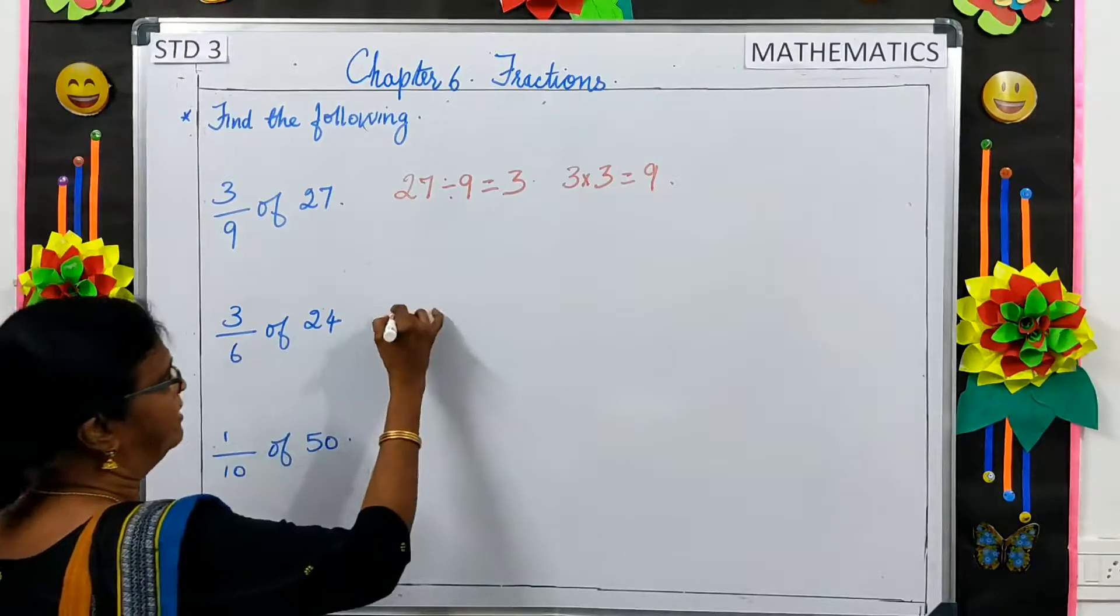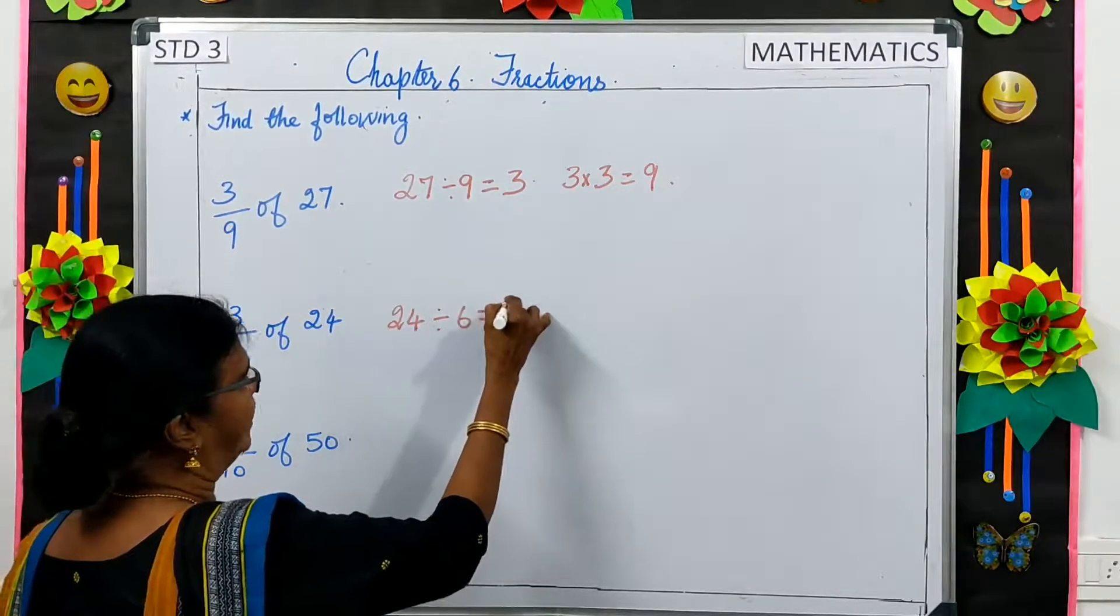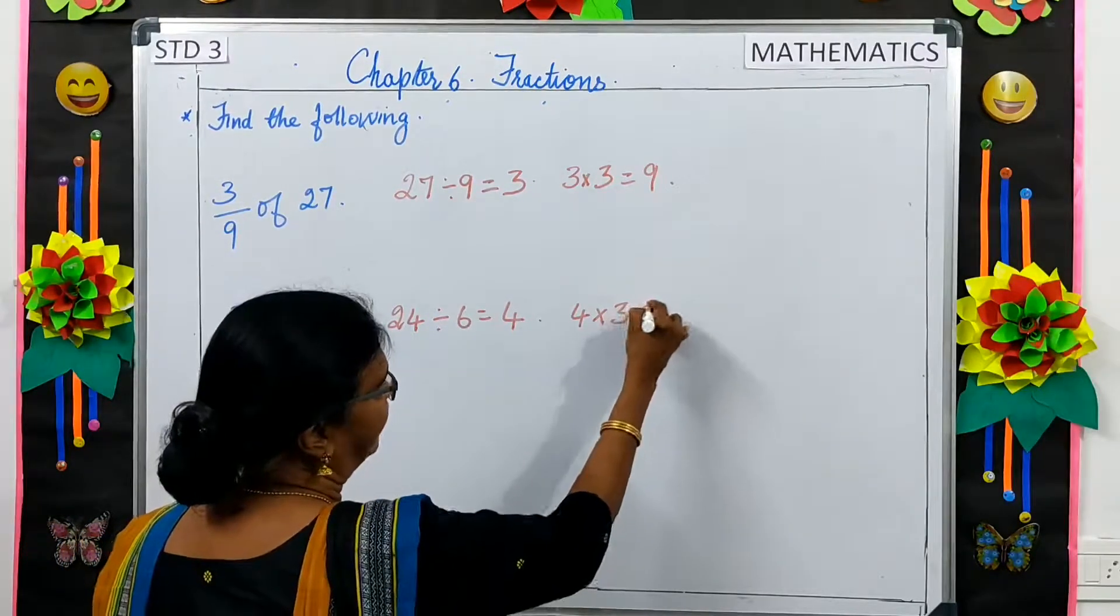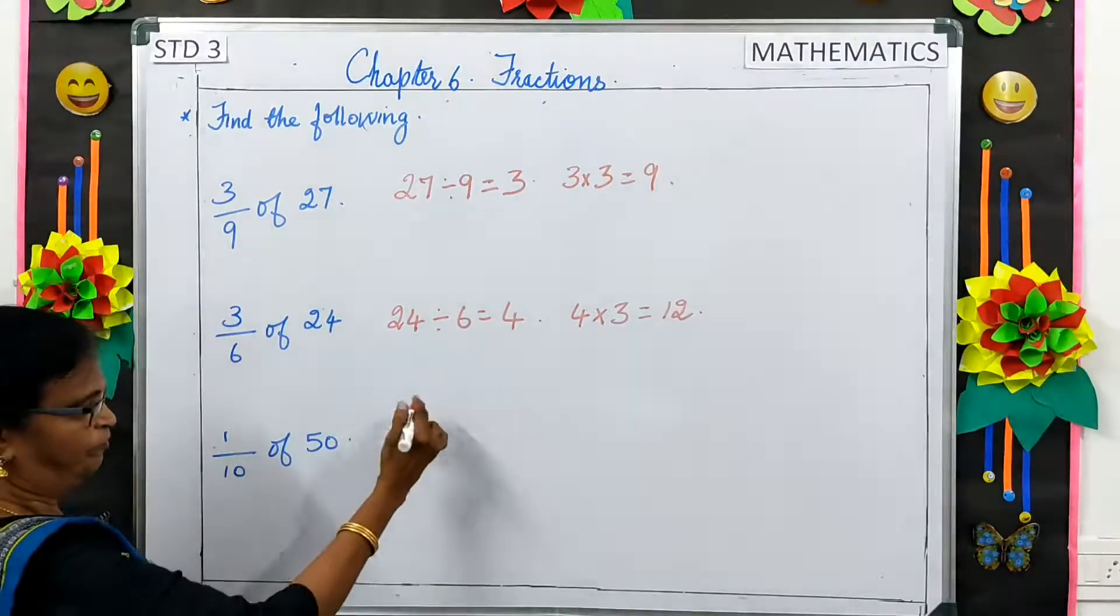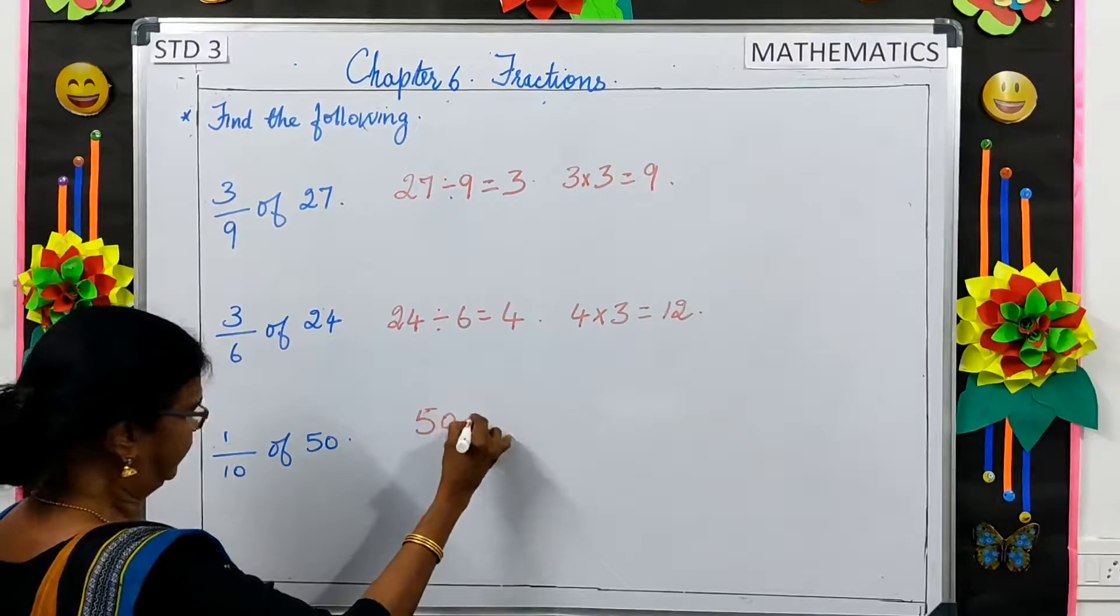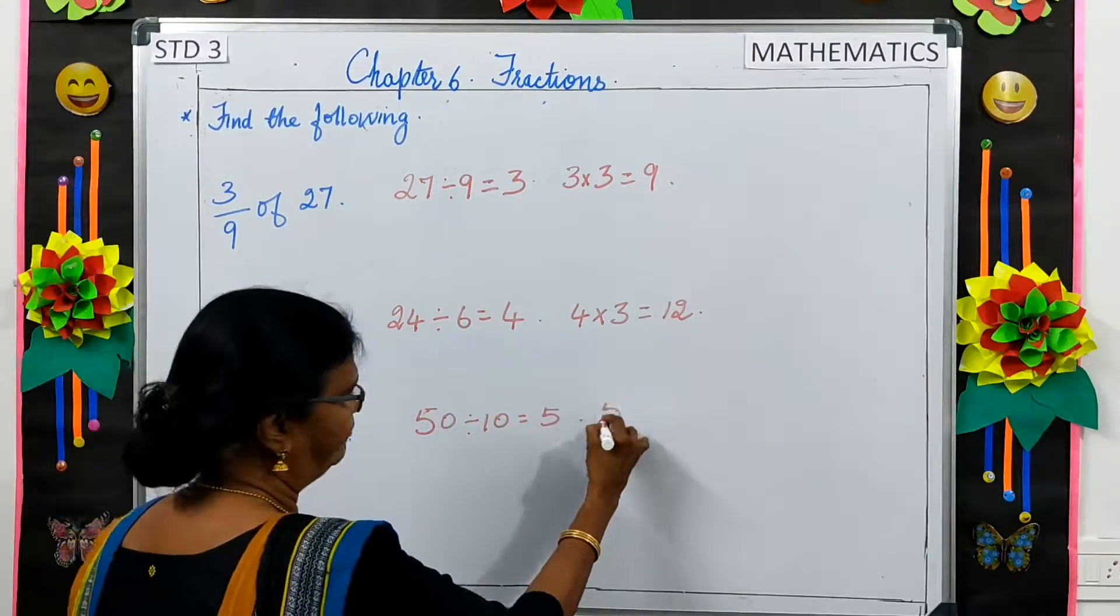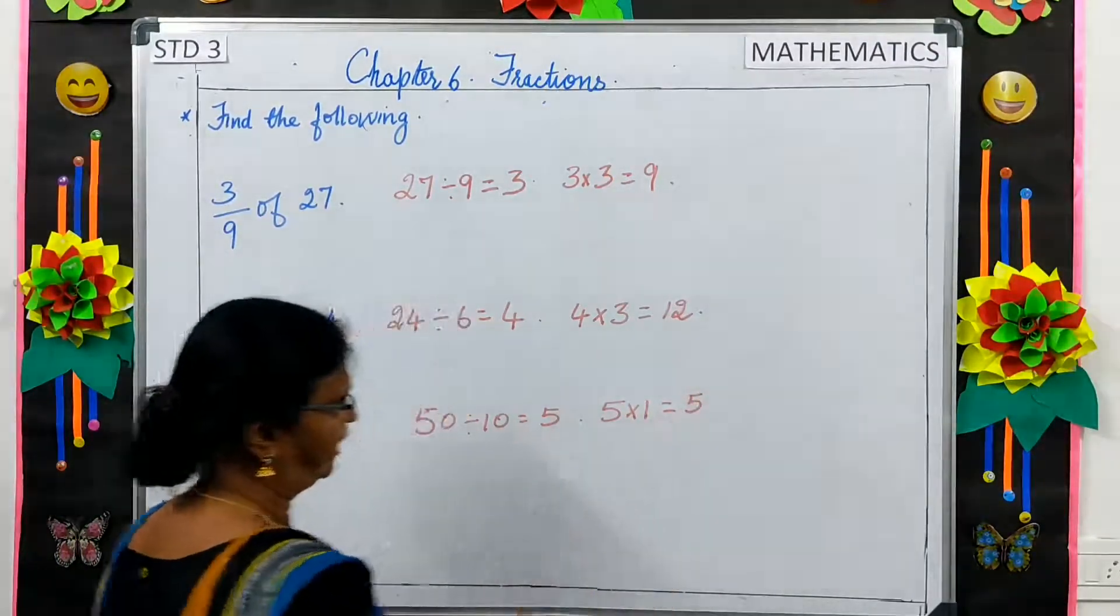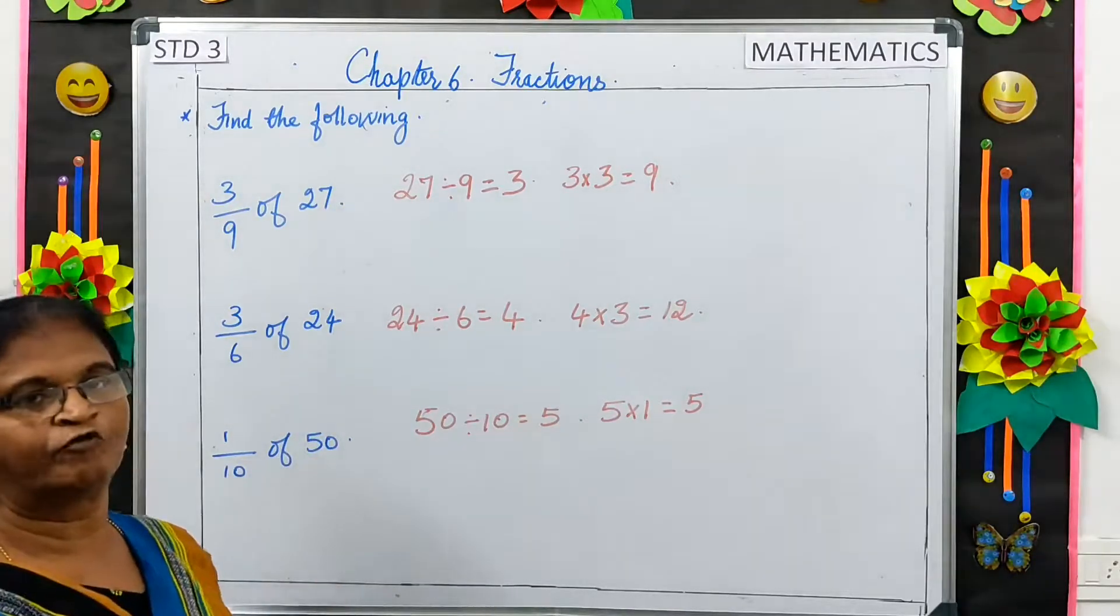The same way, we will divide 24 by 6. We get 4. 4 into 3, we get 12. 5 into 1 is equal to 5. So, 1 by 10 of 50 is 5.